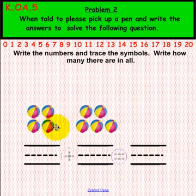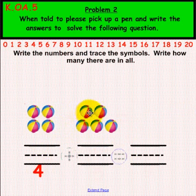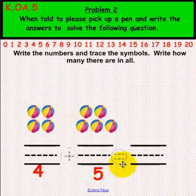If you would please pick up a pen and solve this problem. Okay, we have 1, 2, 3, 4 beach balls and then we have 1, 2, 3, 4, 5 beach balls, and you had a plus symbol — 4 plus 5 equals 9.